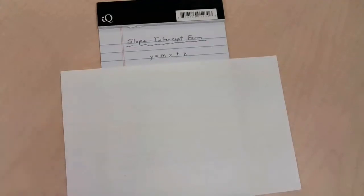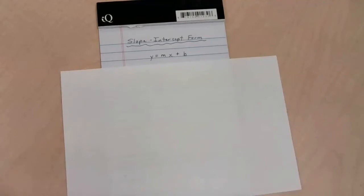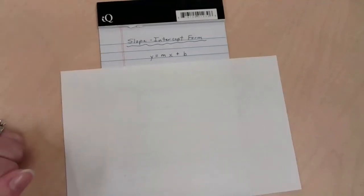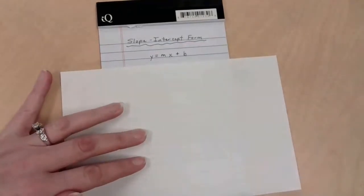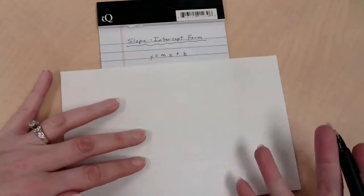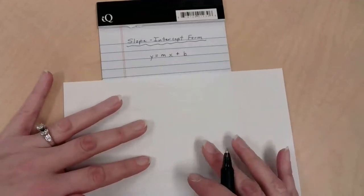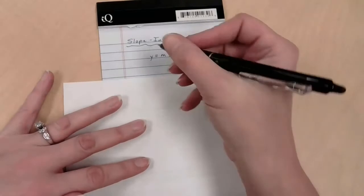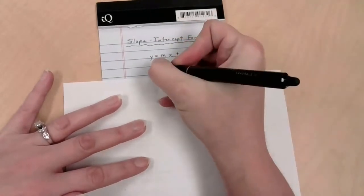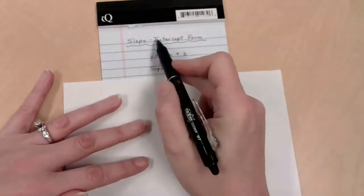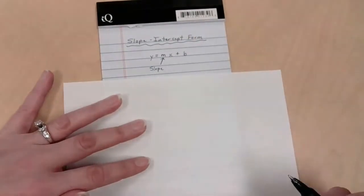Today we are talking about slope-intercept form. Slope-intercept form is probably one of the number one forms that everybody can remember, just because it's so useful. A lot of people remember y equals mx plus b. So m is the slope, that's where it gets part of its name from.